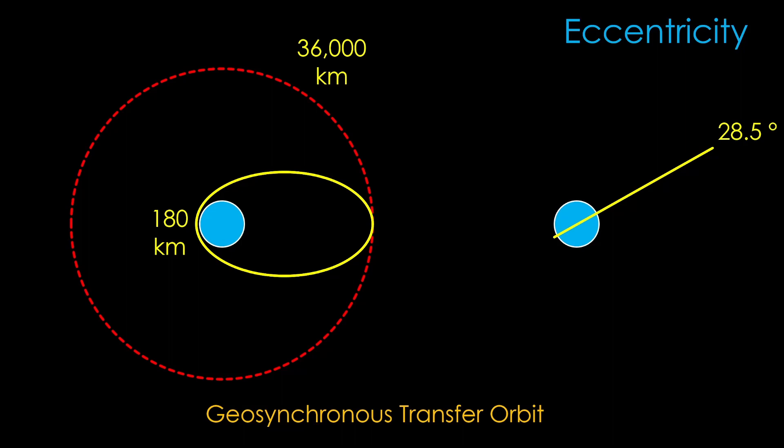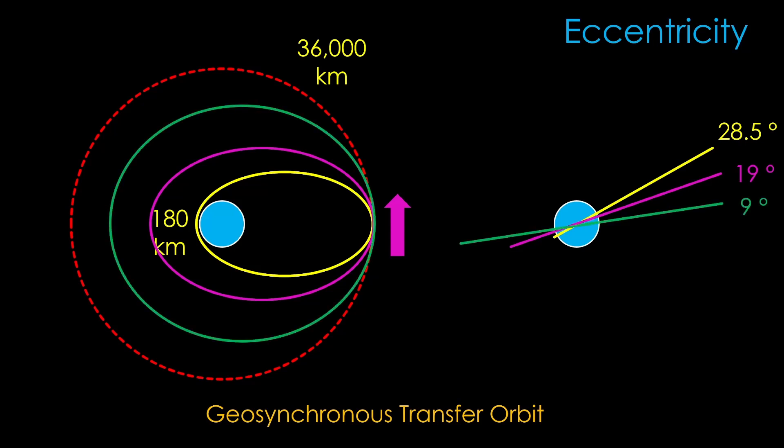First, we need to circularize our orbit to raise the perigee so that it is the same as the apogee. Second, we need to get rid of whatever inclination we got from our launch site. We do this by thrusting in the direction of our orbit at the high point of the orbit, with a little correction to reduce the inclination. We do this at the high point of the orbit, because that is the point where we are traveling the slowest, and therefore it is the point where the cost of inclination change is the smallest. That puts us into a less inclined orbit with a higher perigee and lower inclination. We repeat this several times until we get to a circular orbit with no inclination.